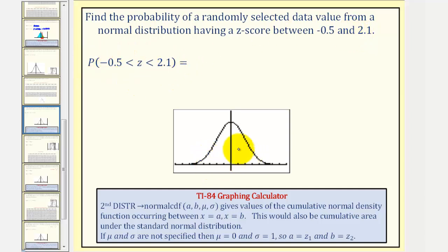If this is a standard normal distribution, the lower bound z-score would be negative 0.5, somewhere here. The upper bound z-score would be z equals 2.1, somewhere here.